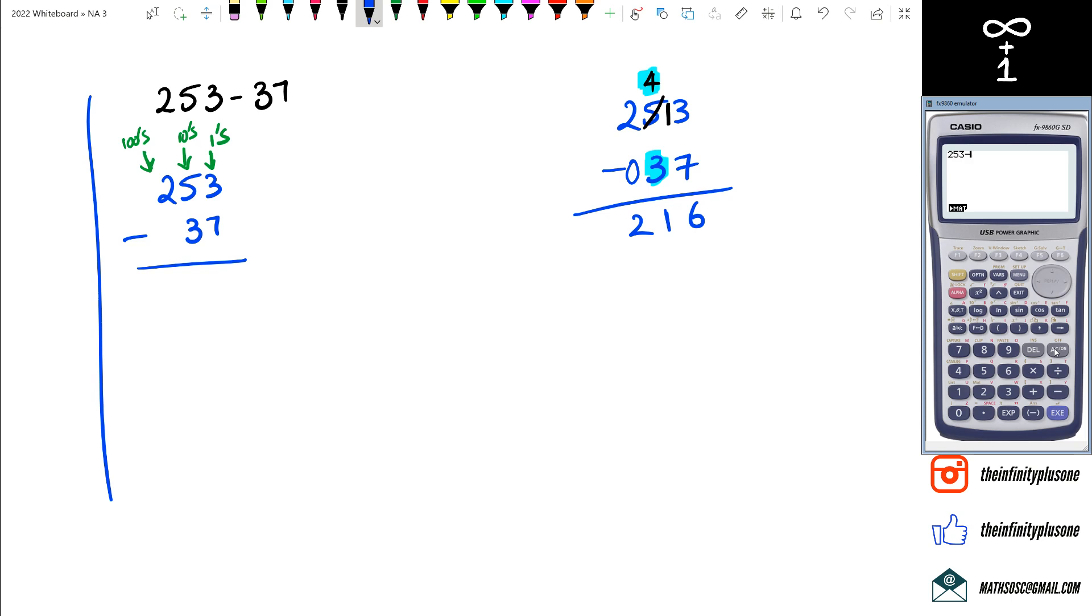Let's just check that first to see if we're on the right track. We've got 253 take away 37. It works, 216. But here's the thing. I didn't understand it. What was actually happening there? How did this 253 suddenly change to 2, 4, 13? Well, let's actually break this down a little bit and it'll kind of make sense.